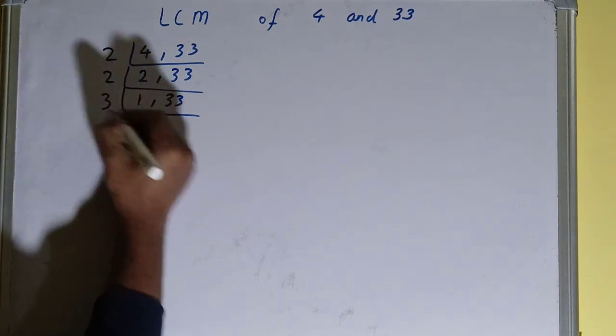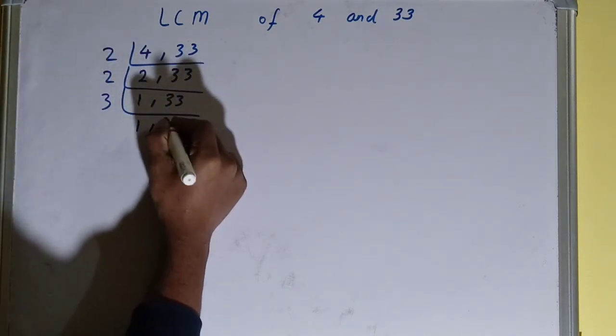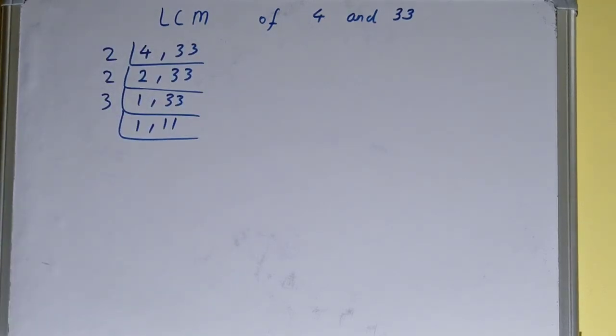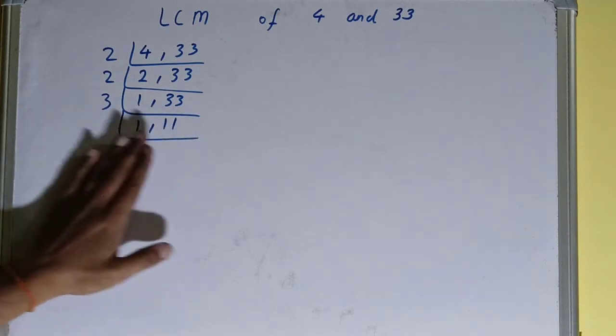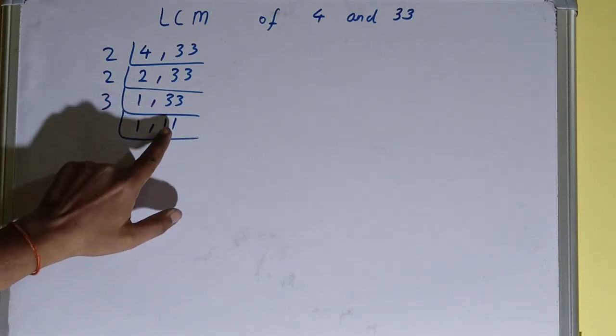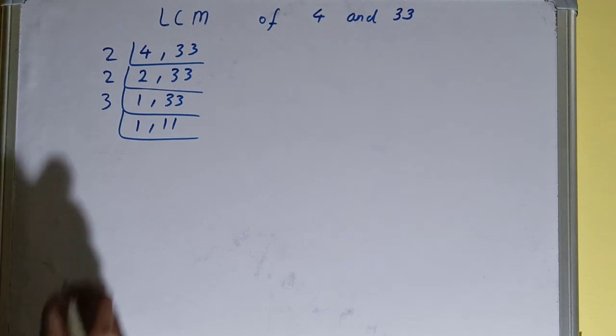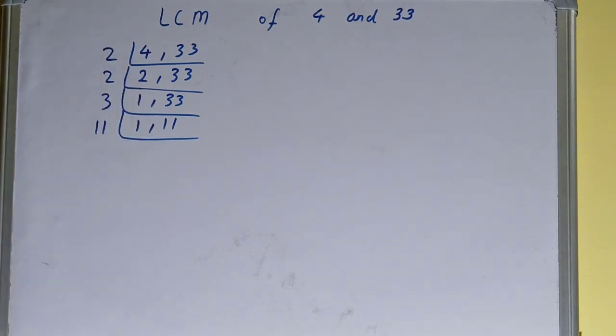We'll be getting 1, 11. And again, if you check, none of the numbers is divisible by 3. And if you see the number 11, it is a prime number. That means 11 is divisible by itself only.